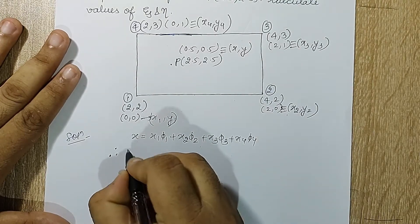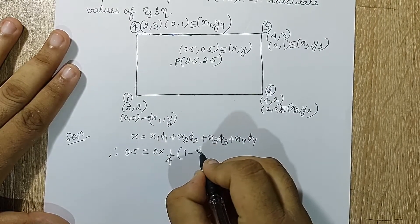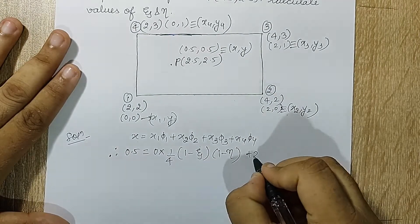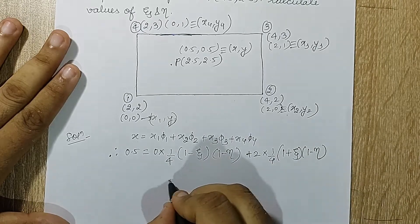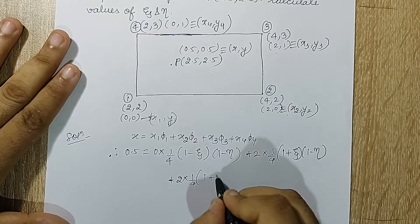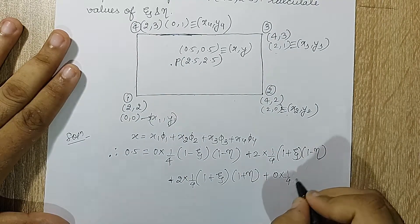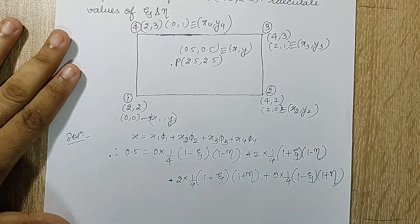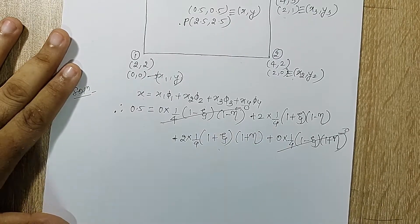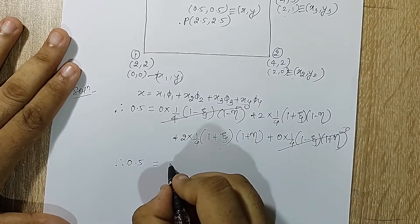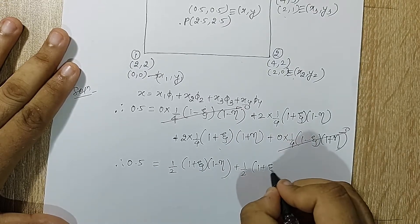Let me substitute: therefore 0.5 = x1·φ1 + x2·φ2 + x3·φ3 + x4·φ4. x1 is 0 into (1/4)(1−ζ)(1−η), plus x2 is 2 into (1/4)(1+ζ)(1−η), plus x3 is 2 into (1/4)(1+ζ)(1+η), plus x4 is 0 into (1/4)(1−ζ)(1+η). The first term and last term are both zero since x1 and x4 are zero. So I will be solving for the middle two terms: 0.5 = (1/2)(1+ζ)(1−η) + (1/2)(1+ζ)(1+η).